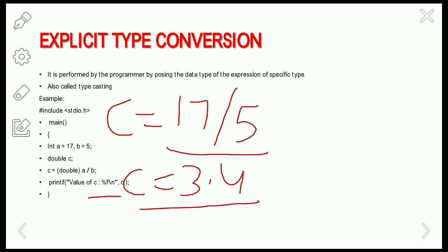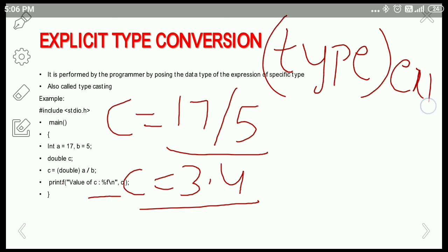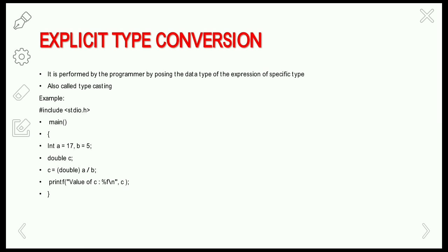This is about type conversion techniques in C. The casting operator syntax is (type) expression, where type is any valid C data type such as int, char, float, double, or long double, and expression is what you want to convert. Thanks for watching — please like, share, and subscribe to the channel.